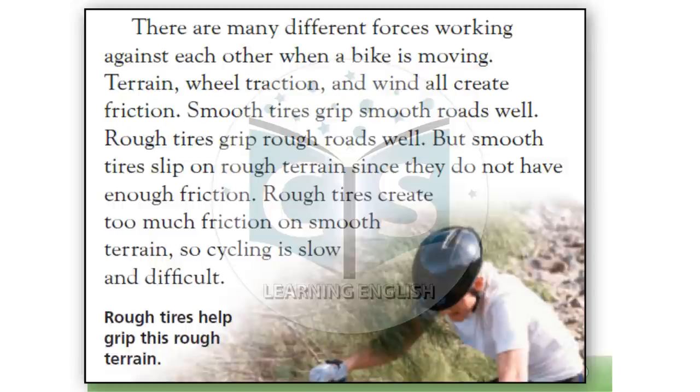Get a grip. There are many different forces working against each other when a bike is moving. Terrain, wheel traction, and wind all create friction. Smooth tires grip smooth roads well. Rough tires grip rough roads well. But smooth tires slip on rough terrain, since they do not have enough friction. Rough tires create too much friction on smooth terrain, so cycling is slow and difficult.